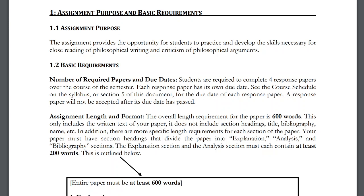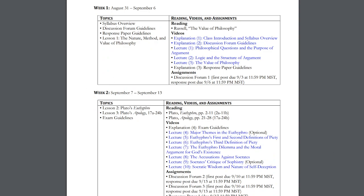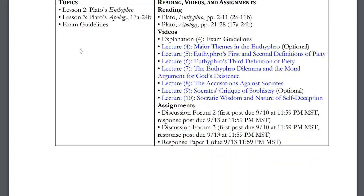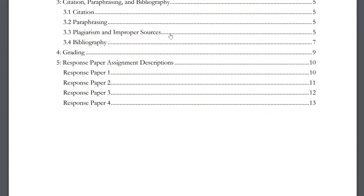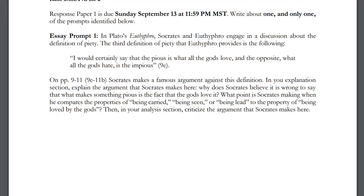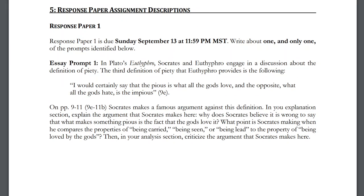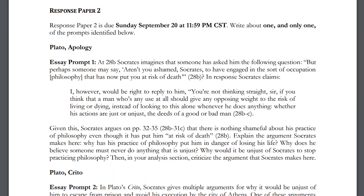There are two ways to find due dates. First, in the syllabus course schedule: week two is when the first response paper is due, on September 13th at the end of the day. Second, in the Response Paper Guidelines document under section five, Response Paper Assignment Descriptions, each response paper entry also lists its due date. Response paper one is due Sunday September 13th, response paper two is Sunday September 20th, and so on.